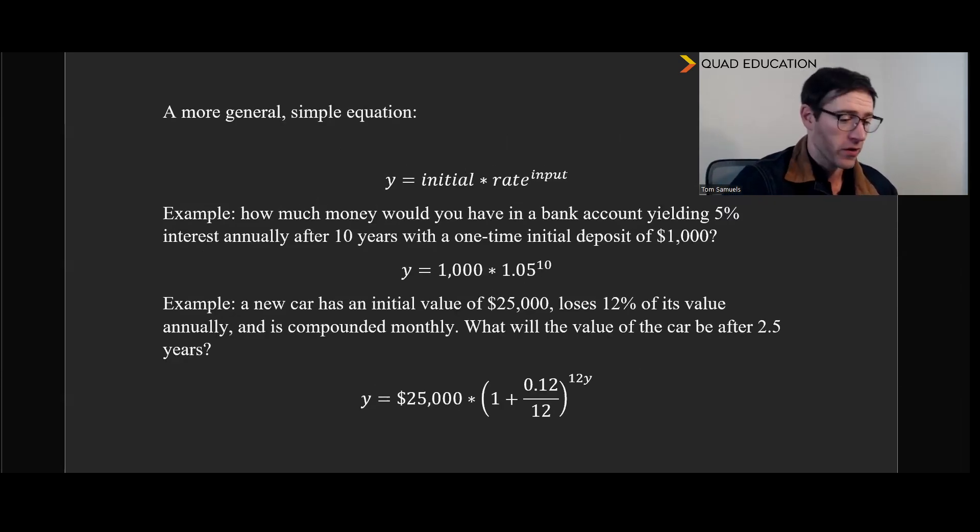Moving on to a bit more equations. So here's sort of a very generalized and simple equation for an exponential equation. So we have Y, which is always our output, and then we have our initial value. So we need to start someplace, we multiply that by a rate, and then we have whatever our input is there for our growth. So, as an example, maybe we say something like we're in a city...